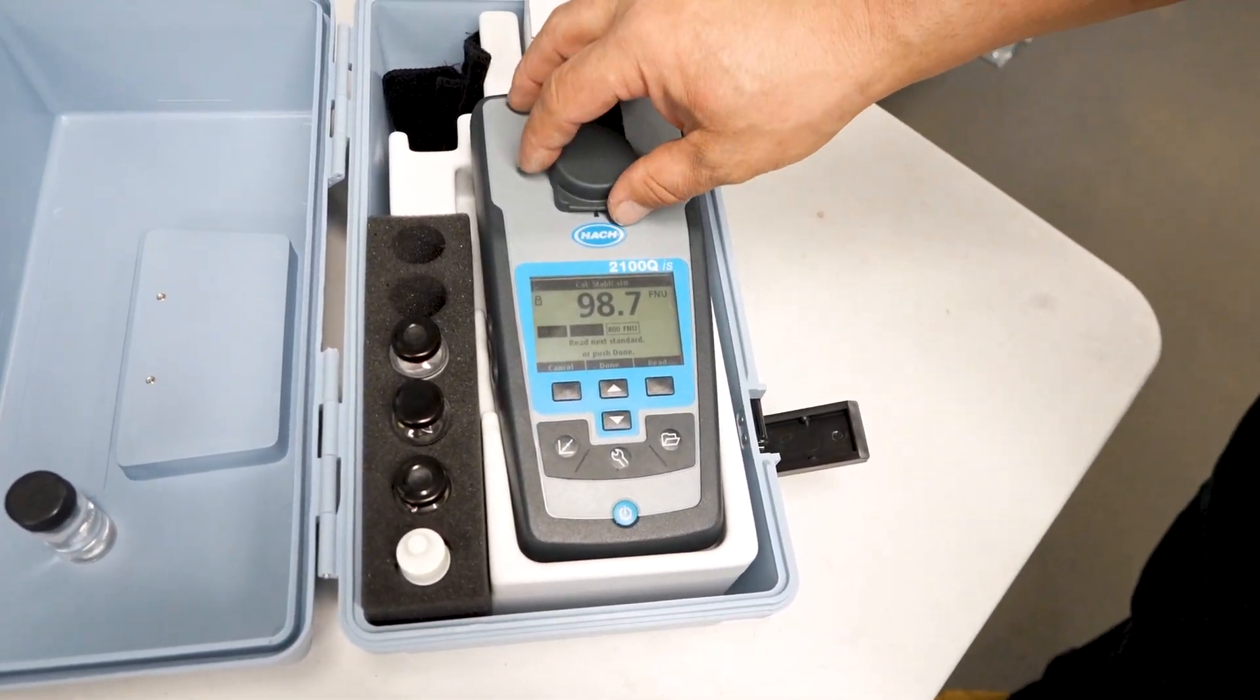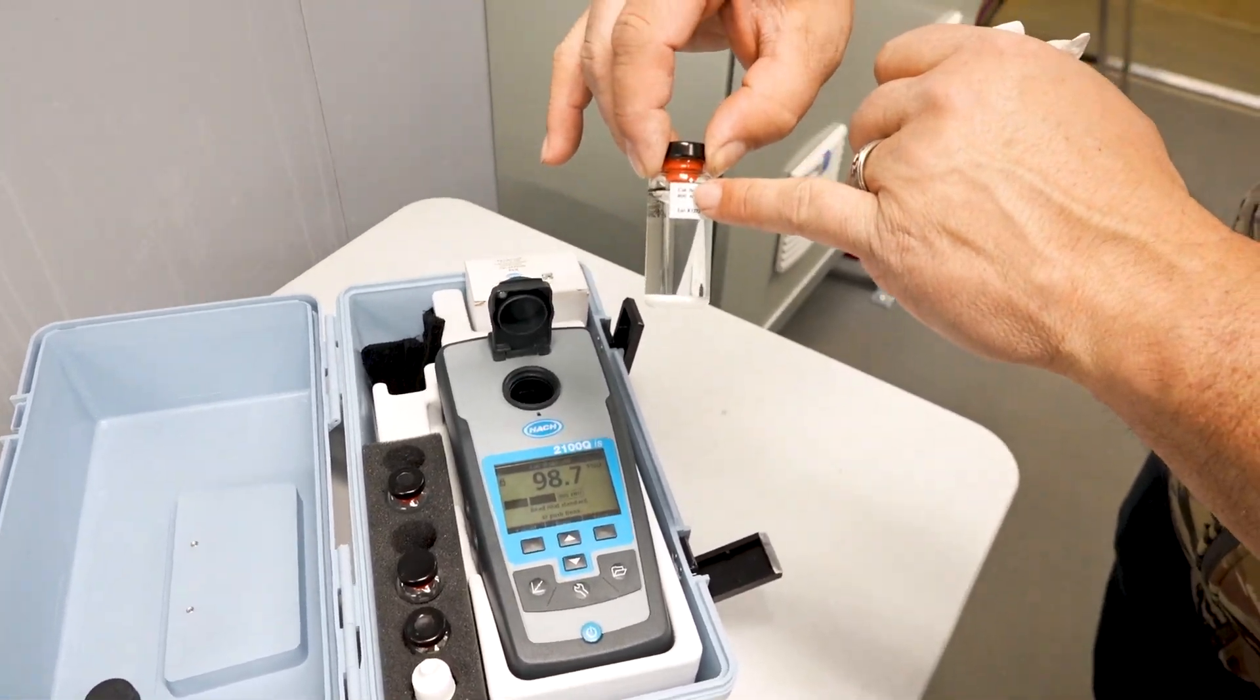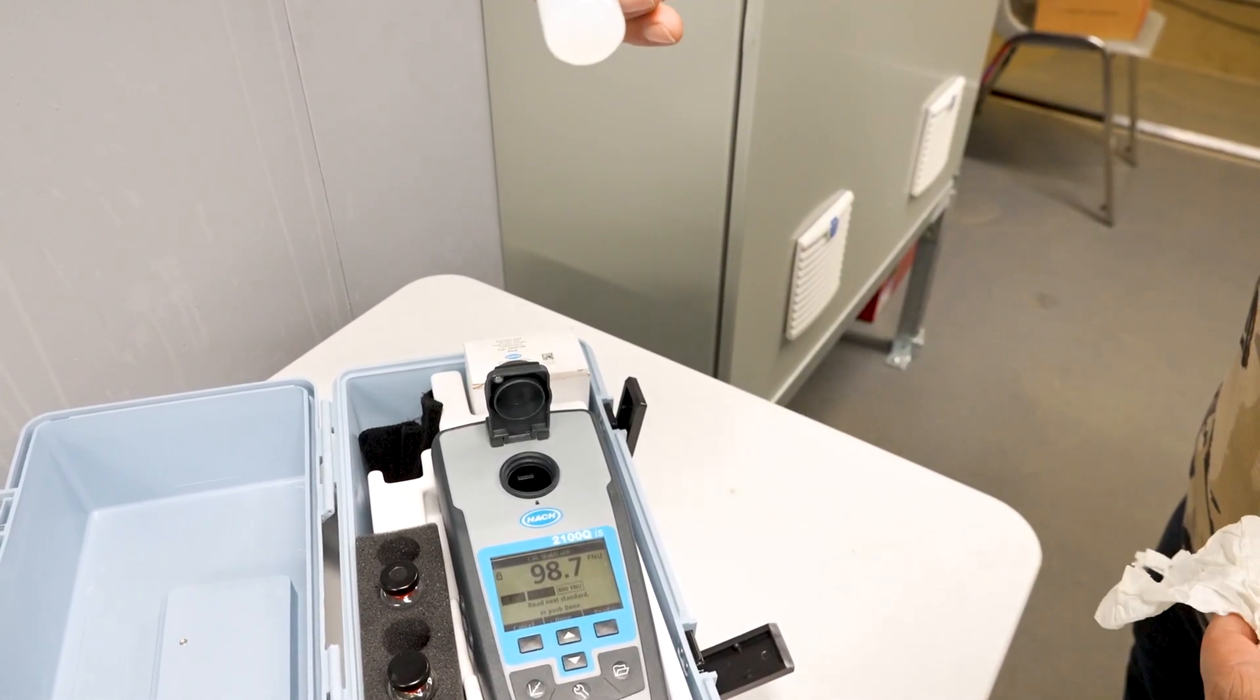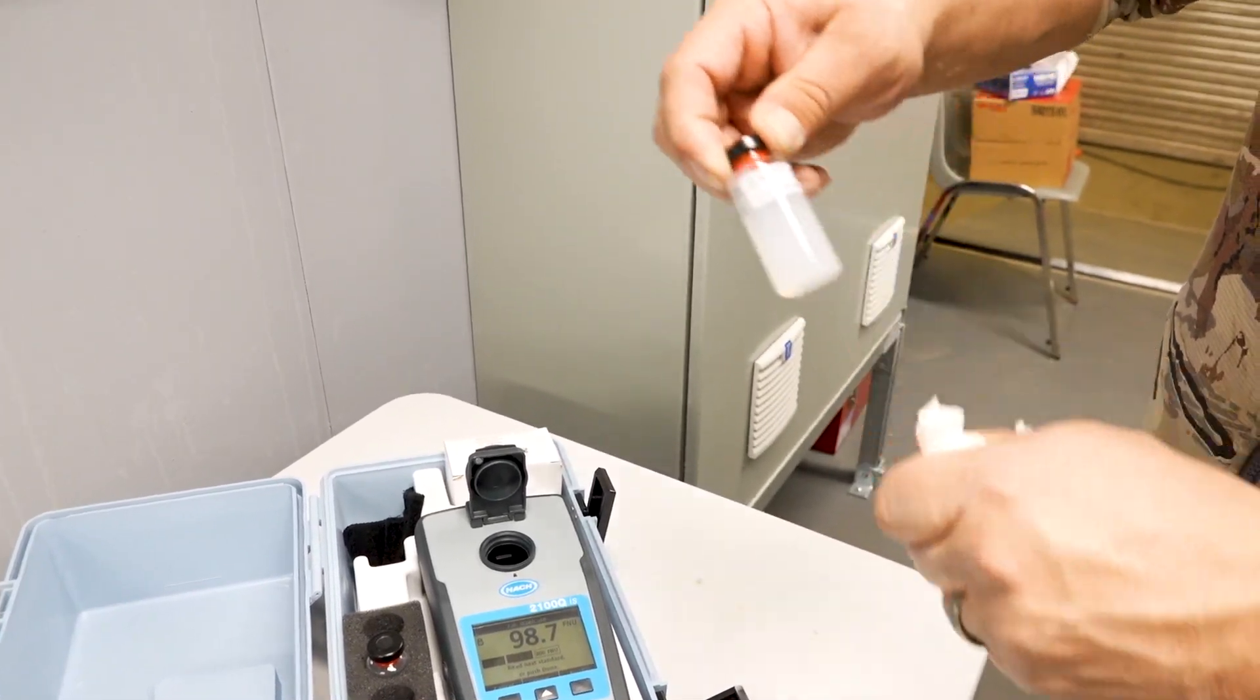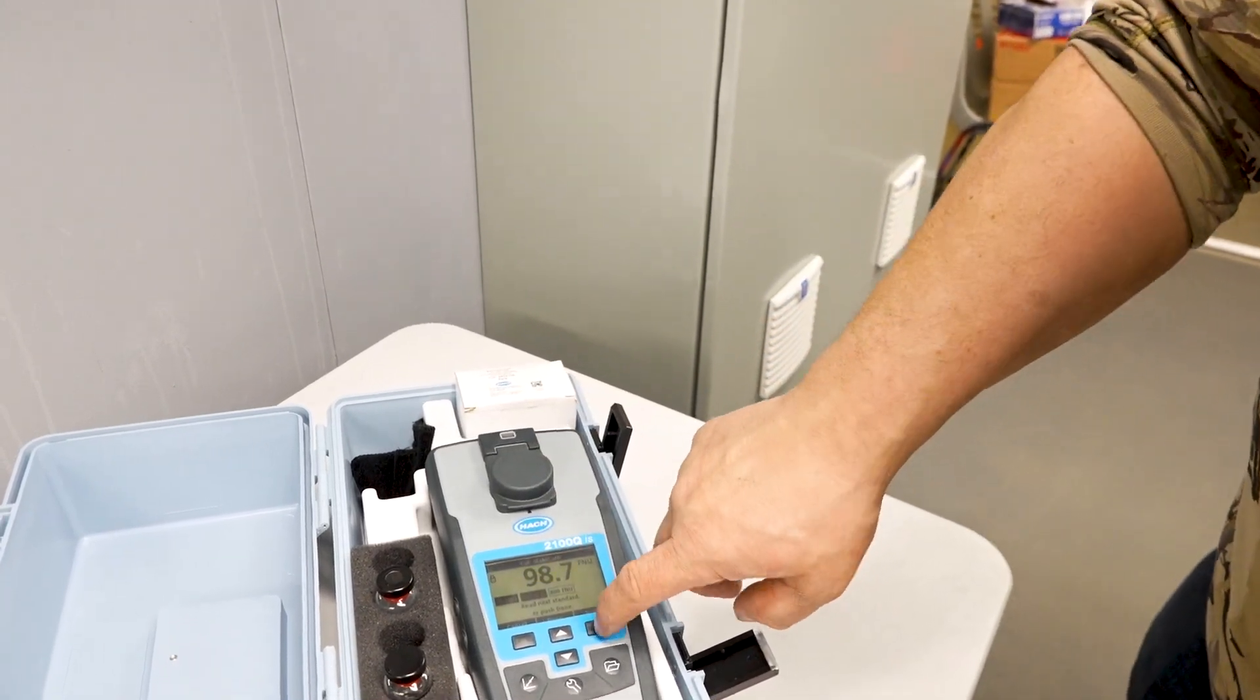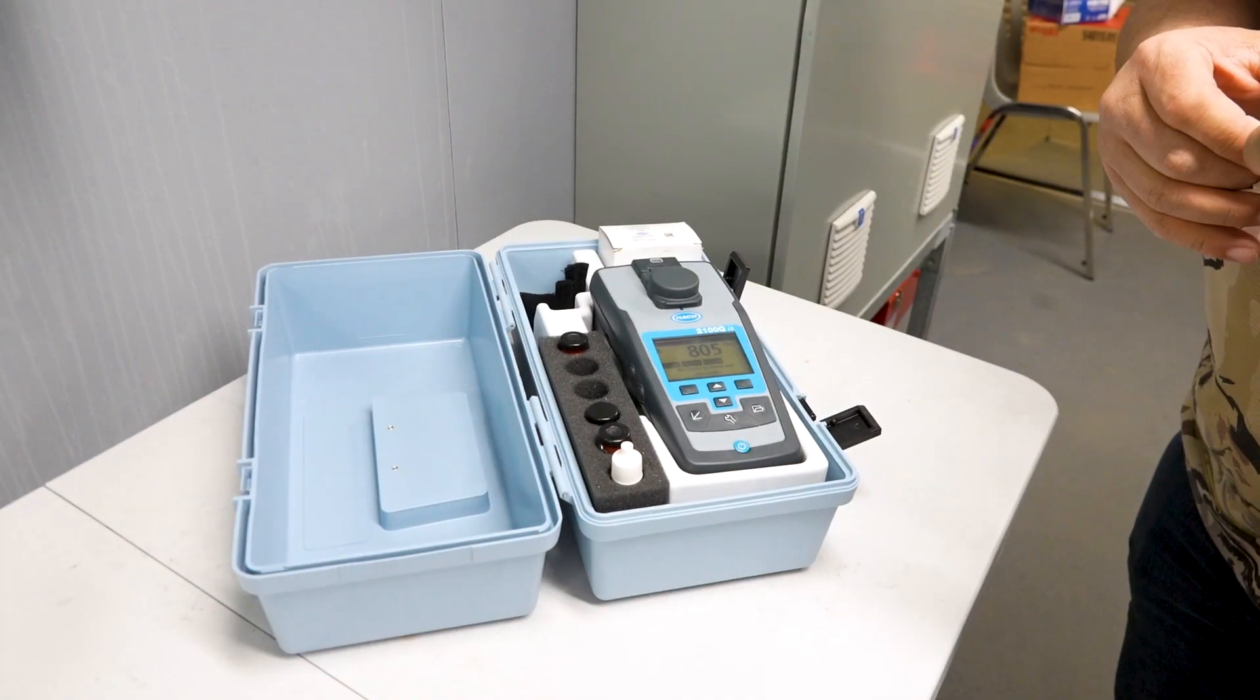Once the 100 NTU sample is done, you remove it, and then we grab the 800 one, it'll be labeled again 800 NTU. This one you've got to mix again. This one's going to be a lot thicker, a lot higher NTU on it, 800 NTU. Once you've got it mixed in, polish it up, and arrow to arrow again, and read. And after this step, it'll tell you if your unit has been calibrated correctly or not.